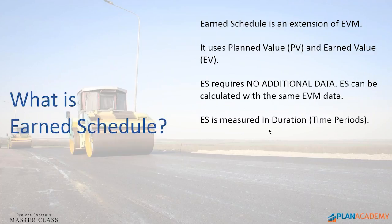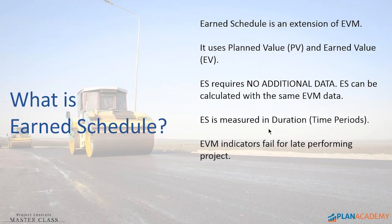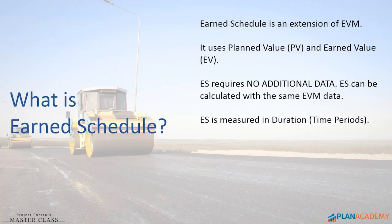One of the great things about Earned Schedule is that the values — the indicators — are measured in terms of duration. So you can get answers like: Earned Schedule is 10 weeks, or your estimate to completion is 12 weeks or 12 months, depending on whatever time period you're using. So that helps us understand better what the projected finish is going to look like.